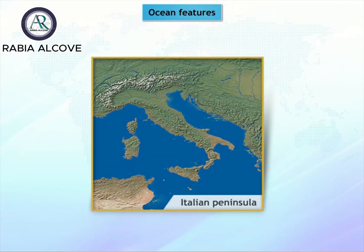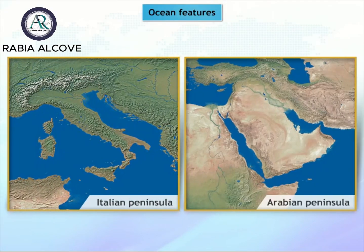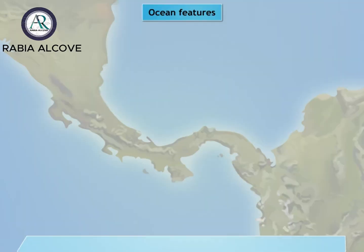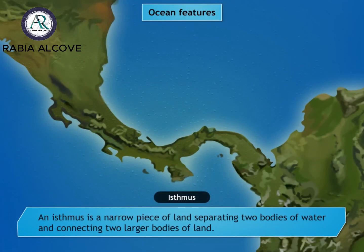An isthmus is a narrow piece of land separating two bodies of water and connecting two larger bodies of land. The Isthmus of Panama, which connects North America and South America, lies between the Pacific Ocean on the west and the Atlantic on the east.